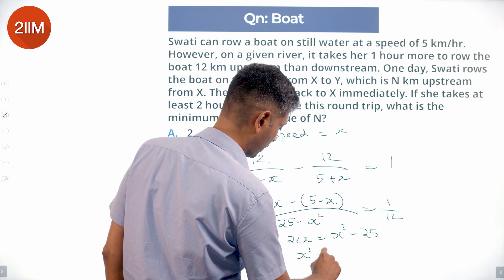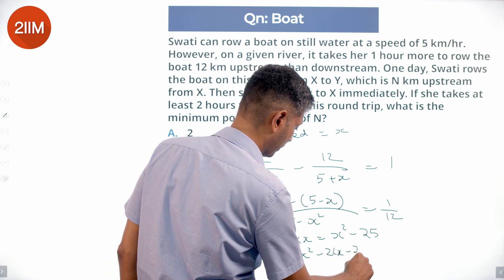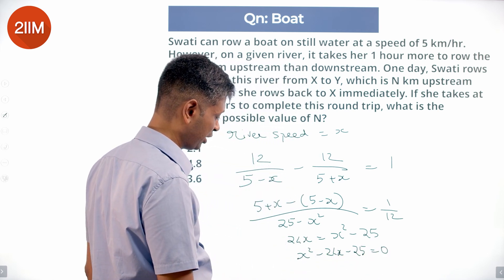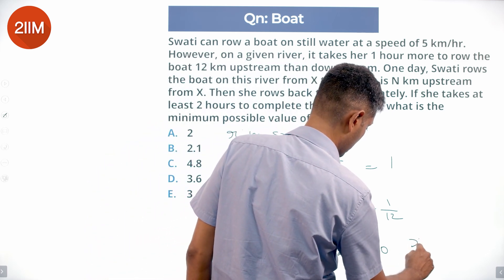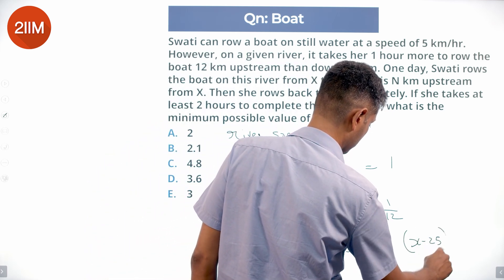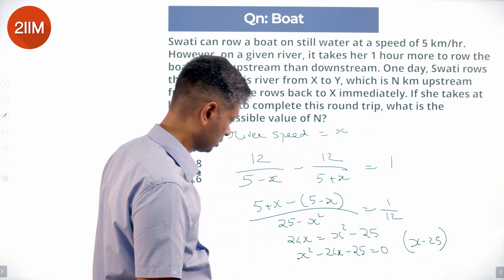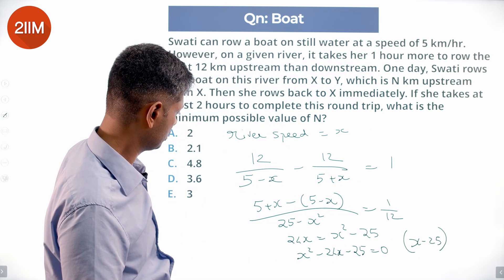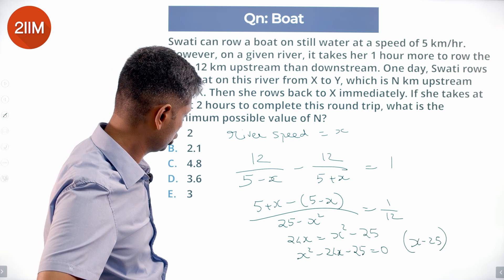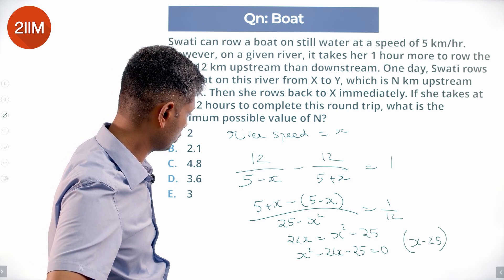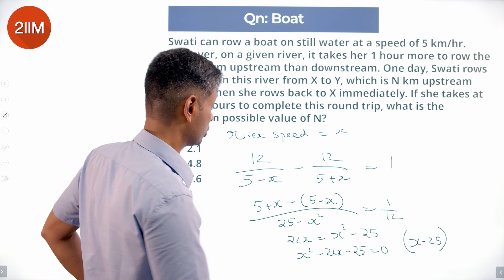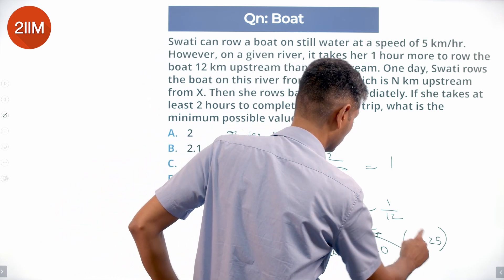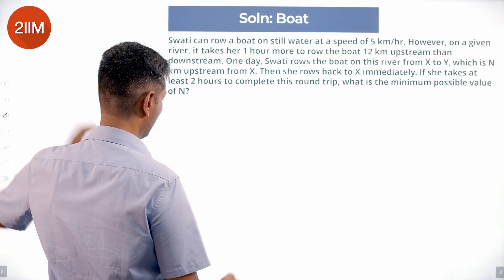This gives X squared minus 24X minus 25 equals 0. Wait, I am making some mistake here. 2X divided by (25 minus X squared) equals 1 — it should not be X squared minus 25, it should be 25 minus X squared. So I am going to redo this on the next side.